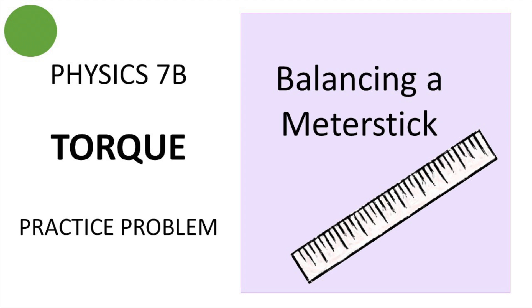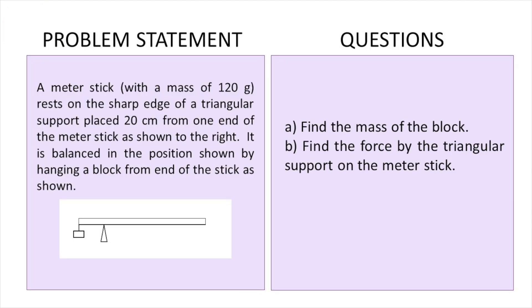So let's go ahead and read the problem. We have a meter stick resting on a sharp edge of a triangular support, placed 20 centimeters from one end of the meter stick as shown in the picture. It is balanced in the position shown by a hanging block from one end of the stick. We have to find the mass of the block and find the force by the triangular support on the meter stick.